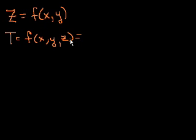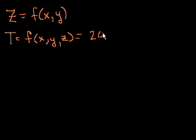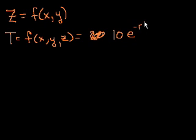Let's say we have a 10 Kelvin heat source in the center of our room. As you go further and further away from that heat source, it's going to get colder and colder. Let's say the center of the room is at coordinates x, y, z equal to 0, and our temperature function is equal to 10 times e to the minus r squared.